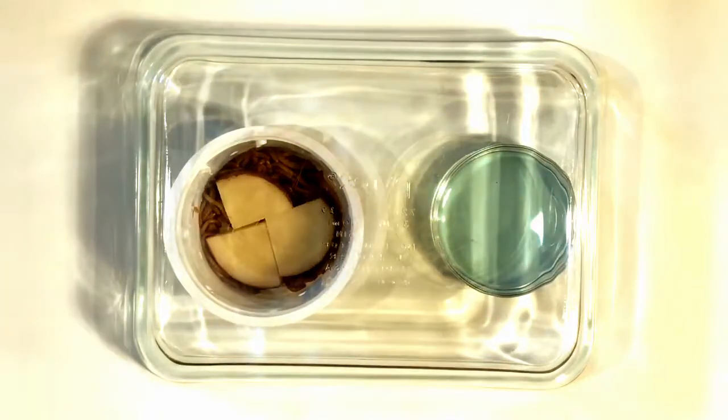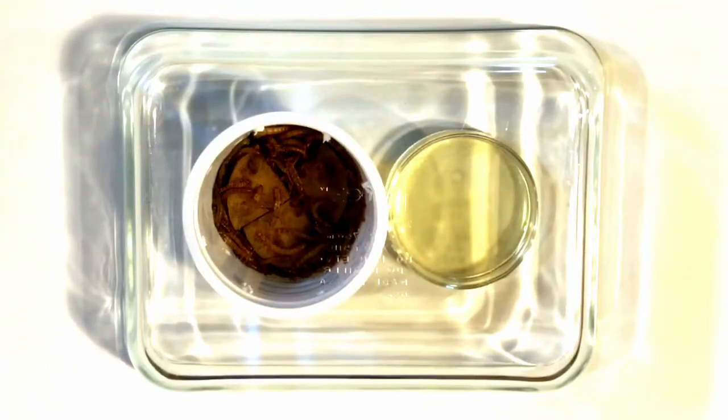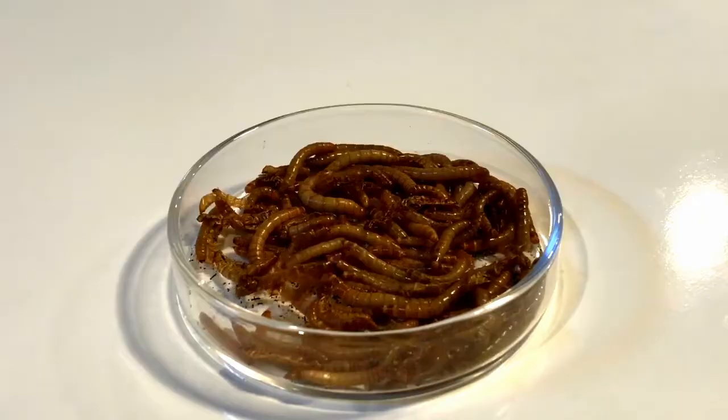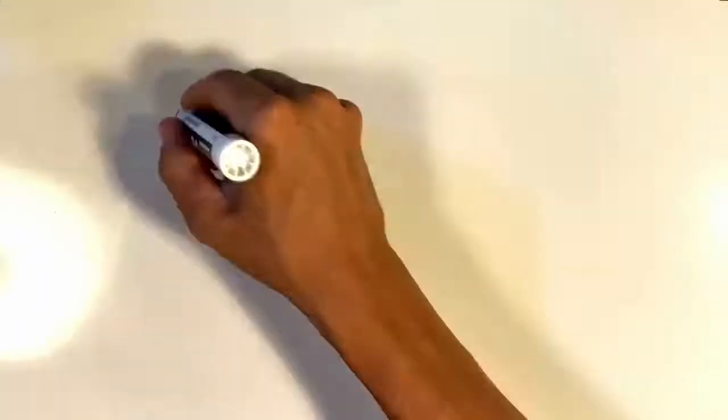We also saw that the BTB turned from green to yellow, meaning that carbon dioxide entered it. The carbon dioxide must have come from the mealworms, who, by the way, got their energy from the potatoes.